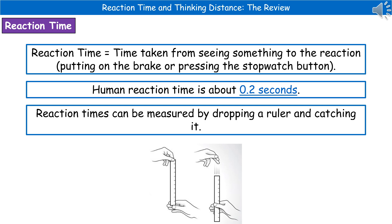Welcome to our review on reaction time and thinking distance. The first thing we're going to consider is what we mean by the phrase reaction time. Quite simply, it's the time taken from seeing something to the reaction you're actually having to that — so this could be putting on the brake or pressing a stopwatch button. Human reaction time is about 0.2 seconds; obviously it varies from individual to individual, but that's a good number to remember.